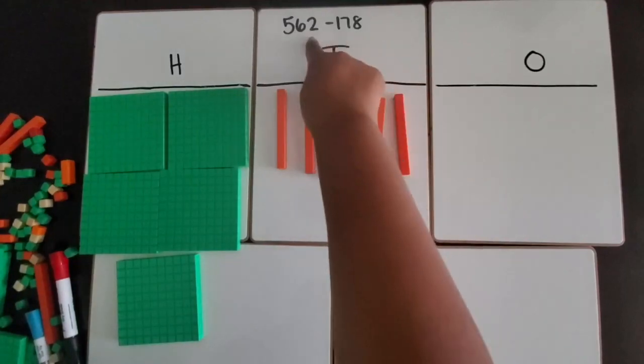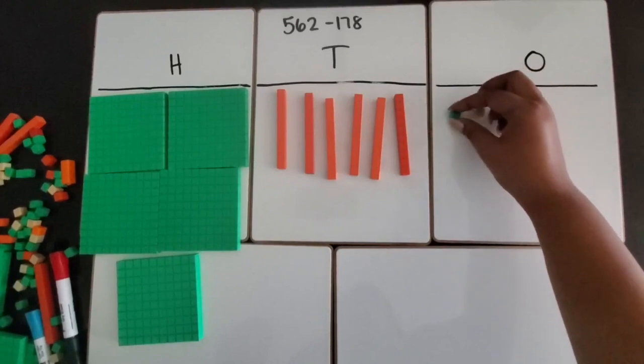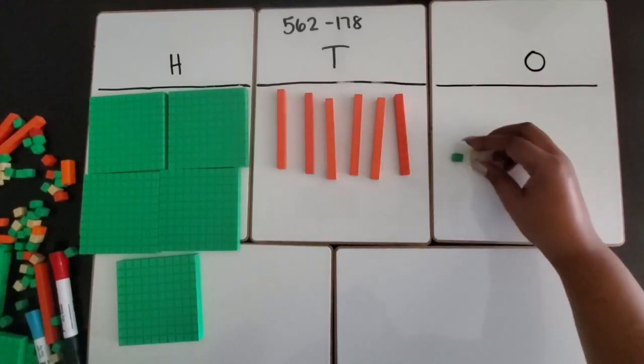Five, six, and then we have two ones. These little unit cubes represent our ones.